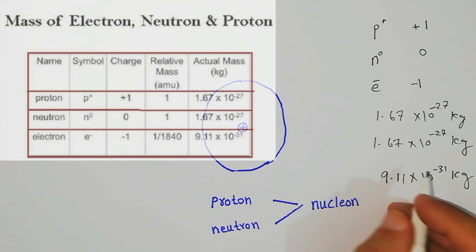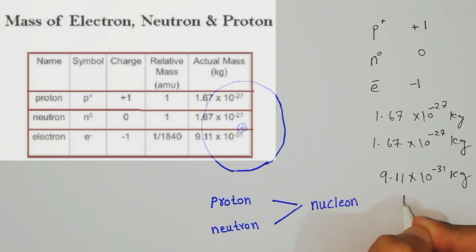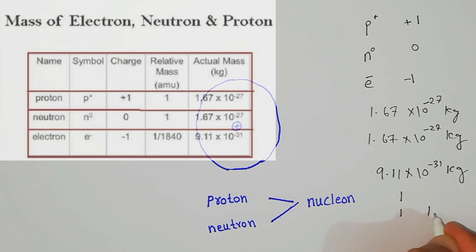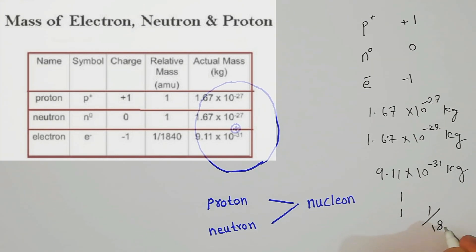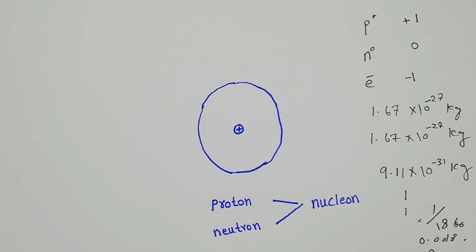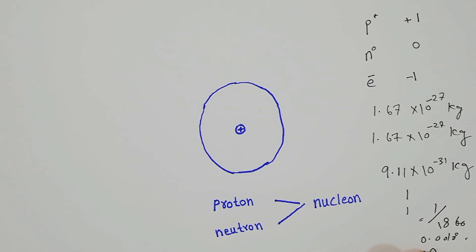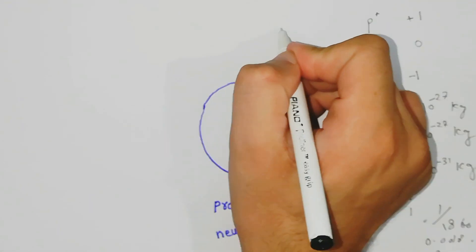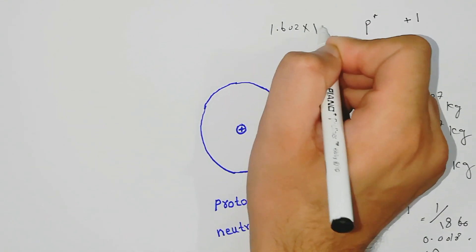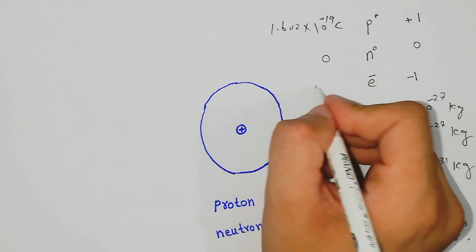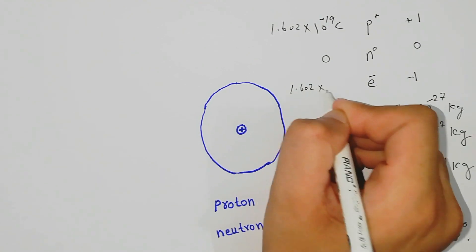The relative mass of a proton is approximately 1, the neutron is also approximately 1, and the electron is 1/1860, which is approximately 0.001, so its relative atomic mass is taken as 0. In terms of Coulomb charge, the charge on a proton is 1.602 × 10⁻¹⁹ C, the neutron has 0 charge, and the electron has −1.602 × 10⁻¹⁹ C.